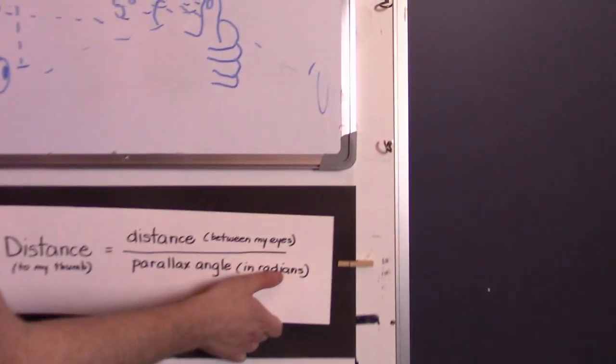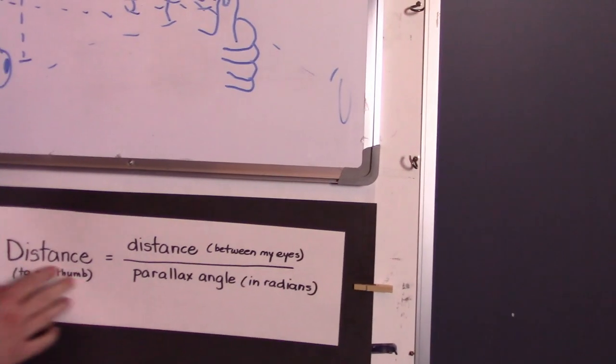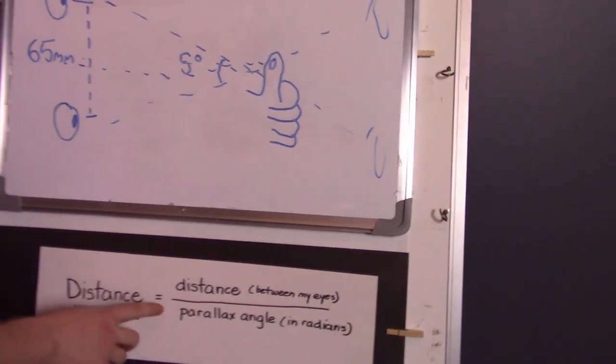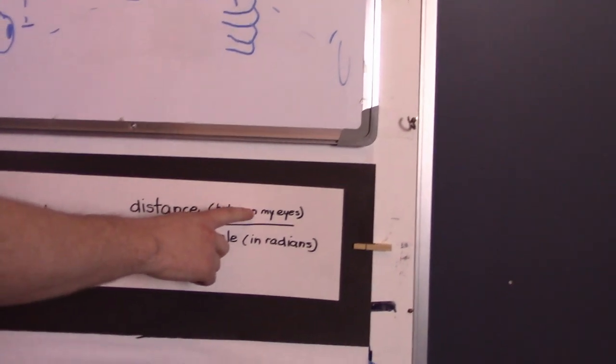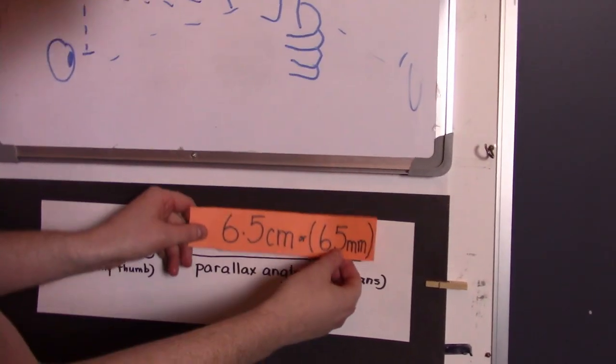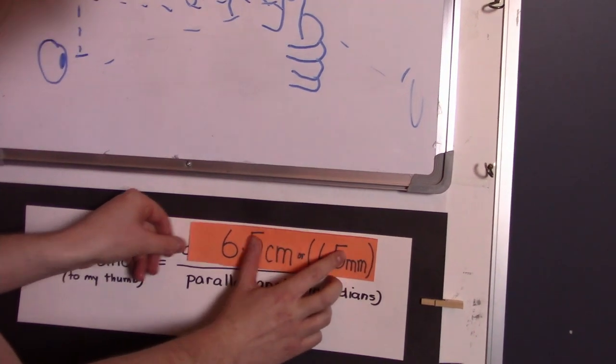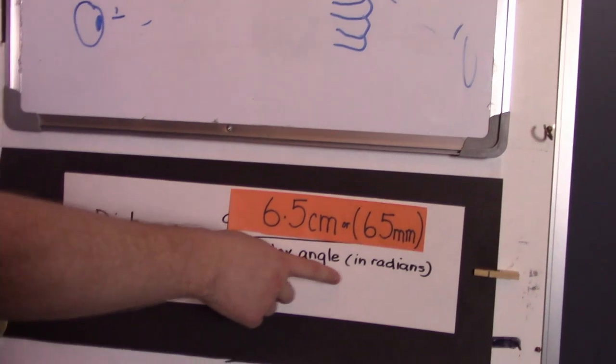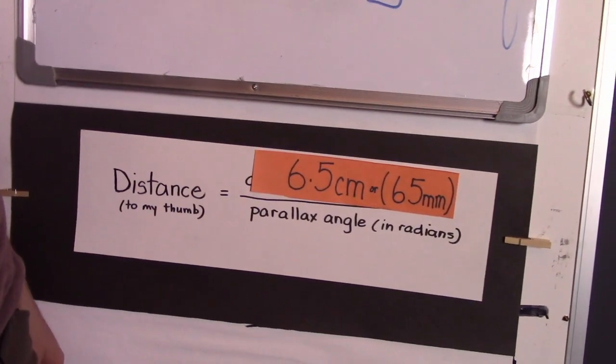This is the parallax formula. It shows the distance to my thumb is equal to the distance between my eyes which we measured to be 6.5 centimeters or 65 millimeters divided by the parallax angle in radians. And what are those? Well we measured our parallax angle in degrees, we got 5 degrees.